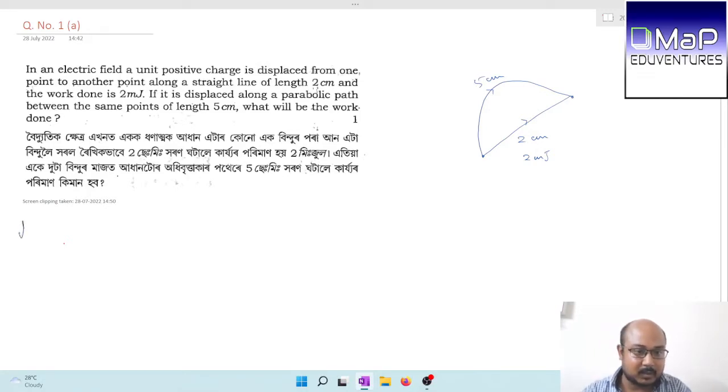The answer is 2 mJ. The explanation is that the electrostatic field is a conservative field and hence the amount of work done is independent of the path.